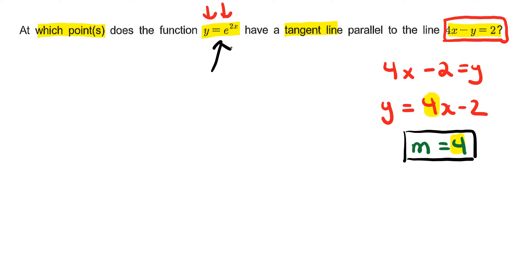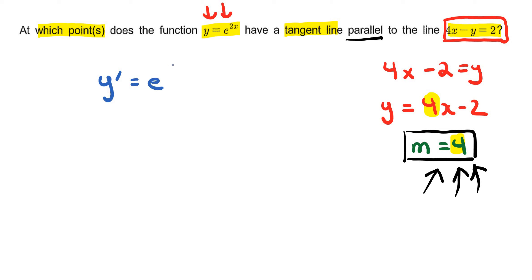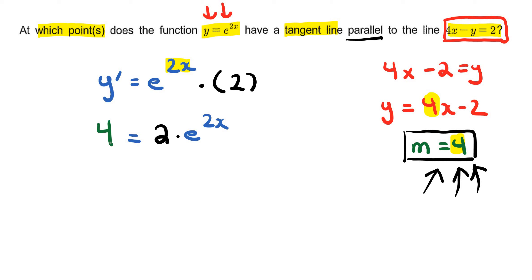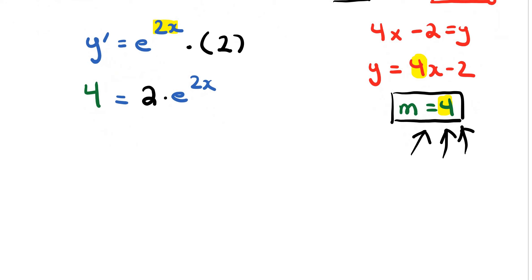When we take the derivative of y equals e to the power of 2x, in order for that function to be parallel it must have the same slope as this linear line. So I'm going to take the derivative of that function and set it equal to 4. The derivative is y prime equals e to the power of 2x times the derivative of the power, which is 2. Rewriting, this is 2 times e to the power of 2x. We set y prime equal to 4 because we want the tangent line to be parallel to that line.